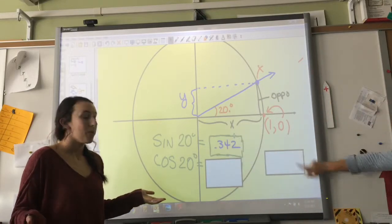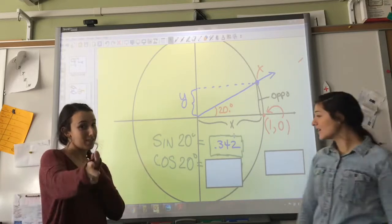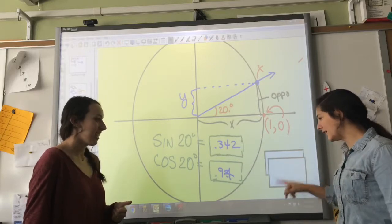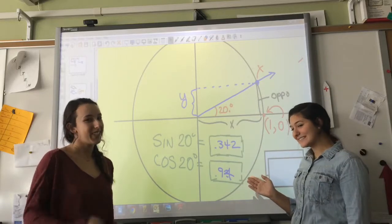So let's see if you got the right answer. Sine of 20 should be 0.342. Did you get it right? Good job. Cosine of 20 should be 0.94. I'm sure you got it.